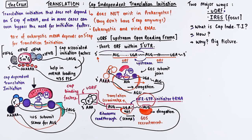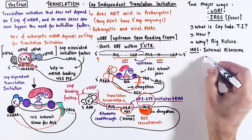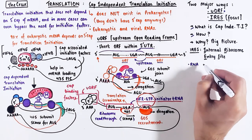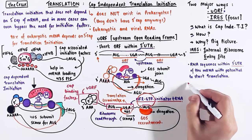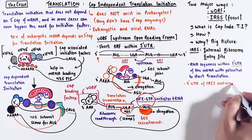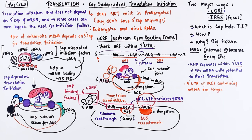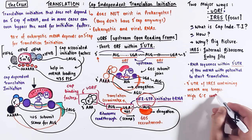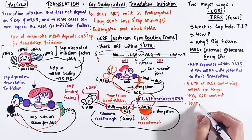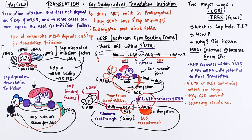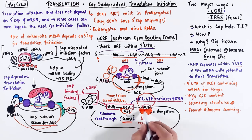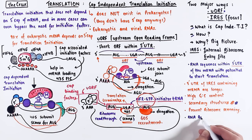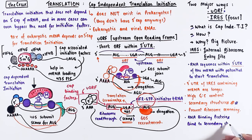Now let's move on to IRES, also known as internal ribosome entry sites, which is simply an RNA sequence within the 5' UTR of the mRNA that has some potential to start translation. IRES-containing mRNAs have longer 5' UTRs than mRNAs which do not have IRES. These internal ribosome entry sequences also tend to have a higher GC content, and they form strong secondary structures like hairpins and stem loops. These secondary structures prevent ribosome scanning on the mRNA, making it very difficult to find the start codon. Additionally, RNA-binding proteins can bind to these IRES sequences.